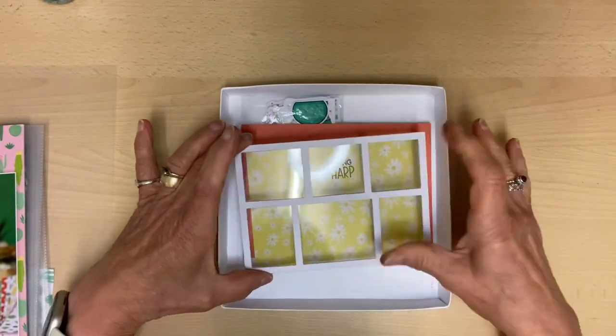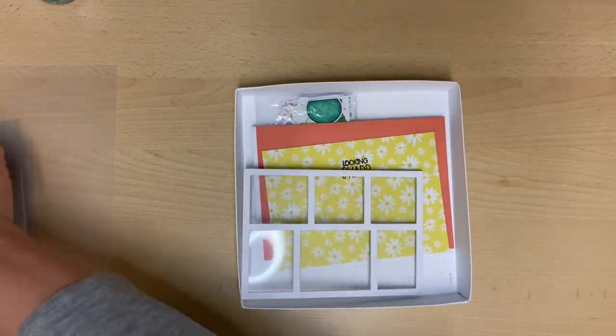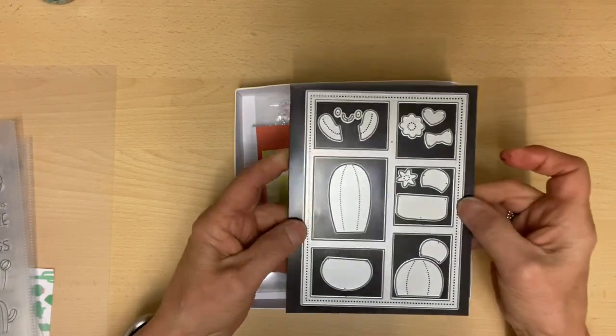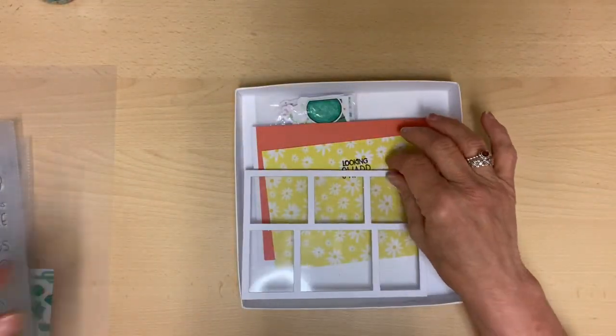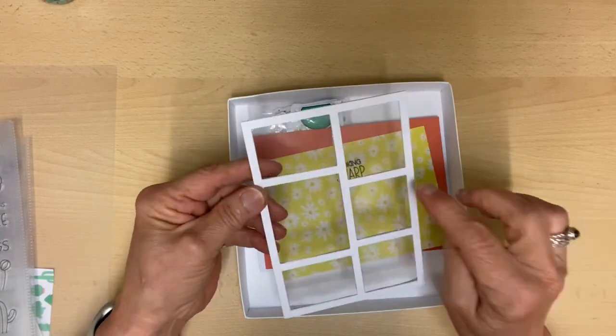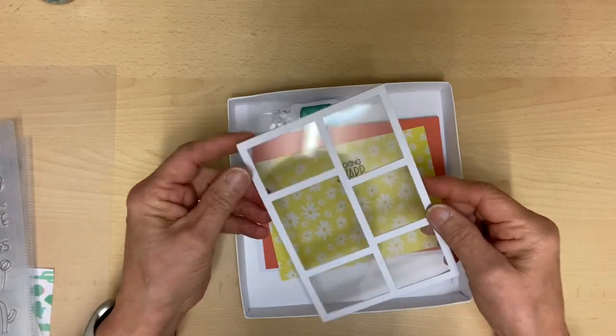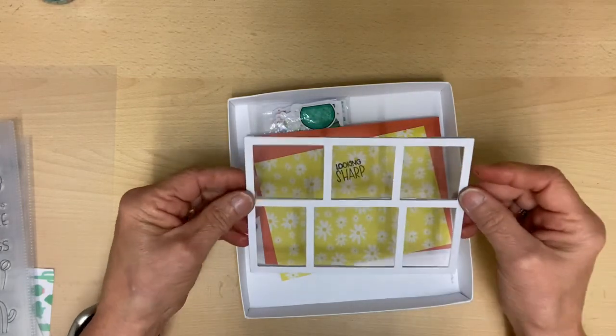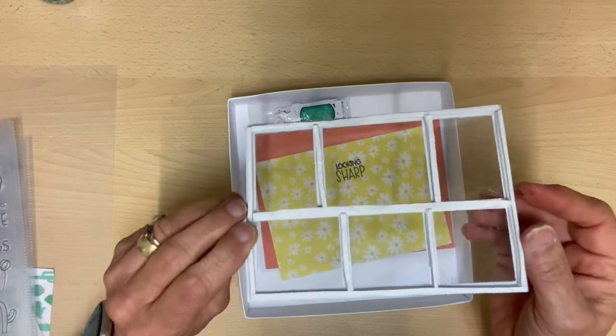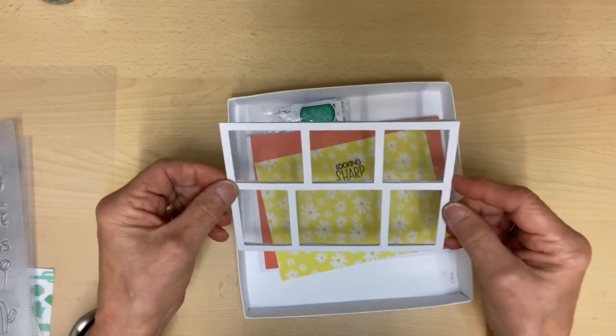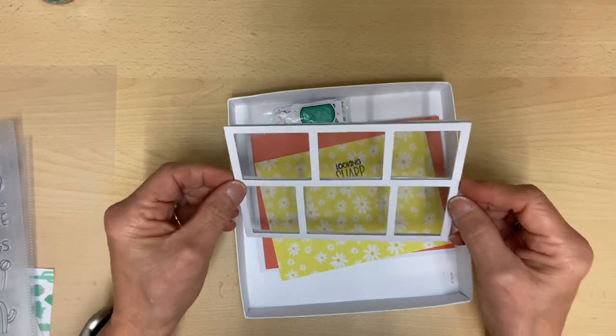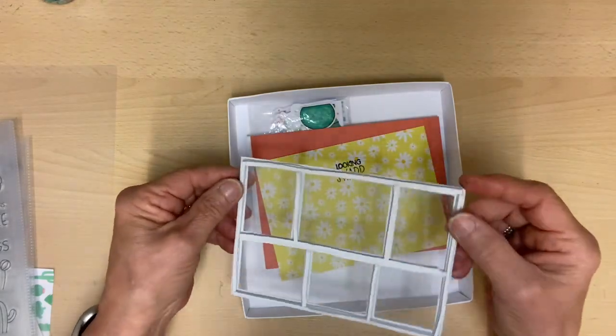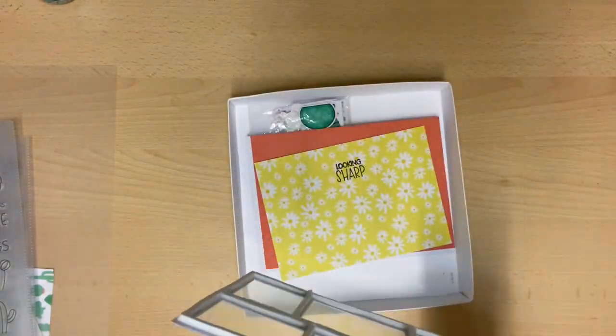So I have taken the either window or bookcase die and I've cut it out in white twice, which I've stuck together. I've taken a piece of acetate to just slightly less than what the size is and stuck that on.